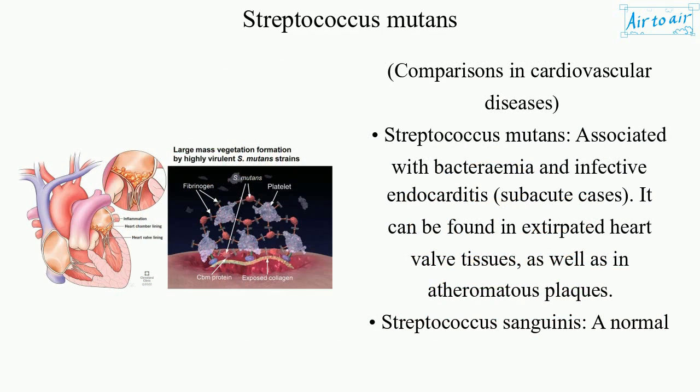Comparisons in cardiovascular diseases: Streptococcus mutans is associated with bacteremia and infective endocarditis, particularly subacute cases. It can be found in extirpated heart valve tissues as well as in atheromatous plaques.